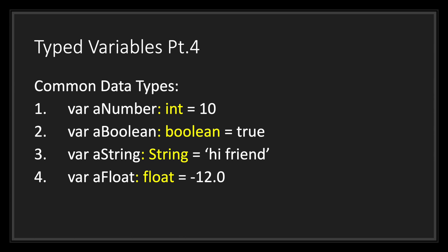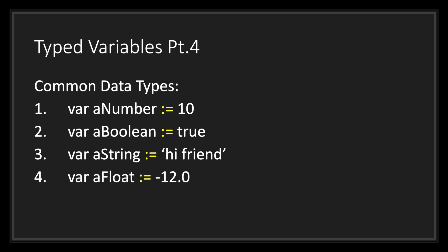Common data types you may find yourself using with typed variables include integers, booleans, strings, and floats. Instead of typing them out, you can also infer the data type onto your variable by the literal value you are assigning. For example, a variable called a_number infers and assigns the integer value and integer data type. Similarly, a variable called a_boolean infers the boolean value true and boolean data type, a_string infers the string data type with the value "hi friend", and a_float infers the float data type with the value -12.0.